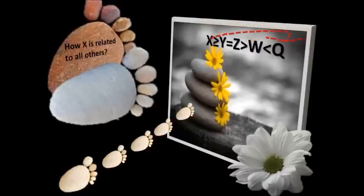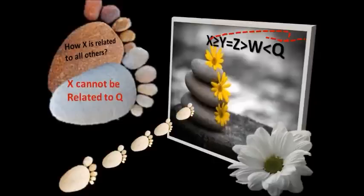Now x and q — how are they related? Looking at the symbols between x and q: greater than, equal to, equal to, but also less than. You have both greater than and less than — the same highest priority symbols. This is a big confusion. The answer is: you cannot relate x and q. When you have same priority symbols between two letters, you simply cannot relate those two letters.